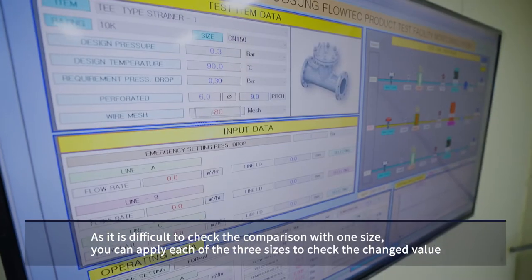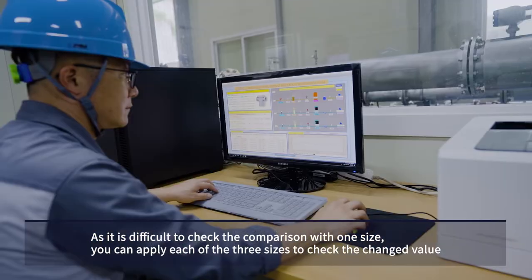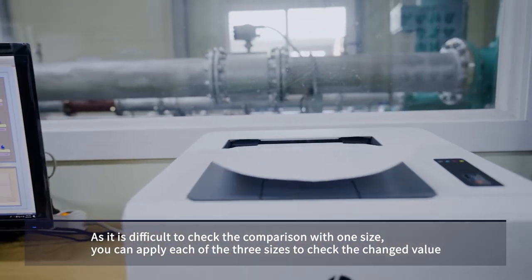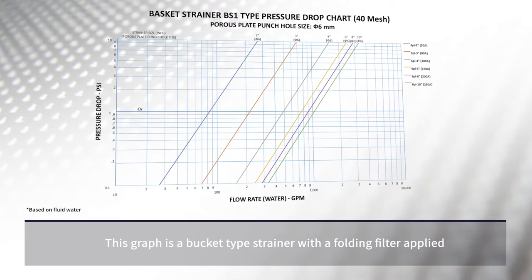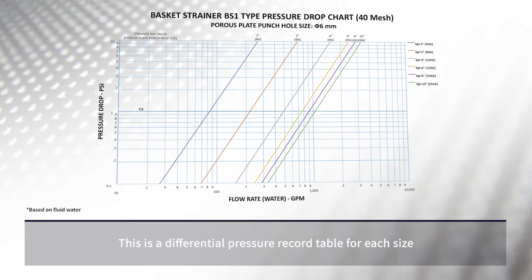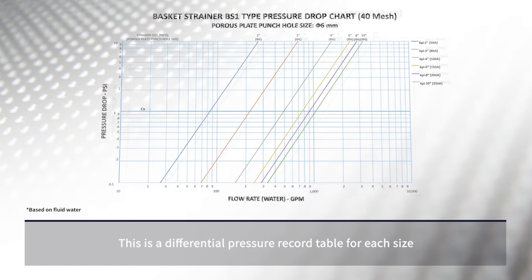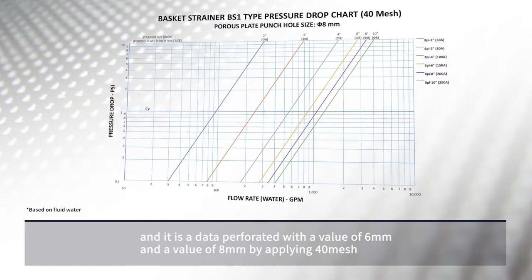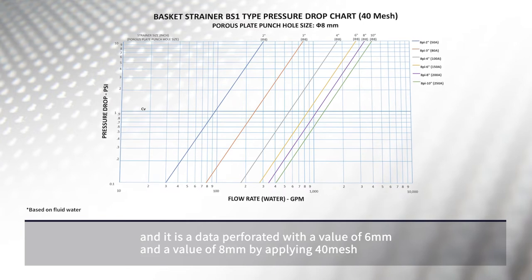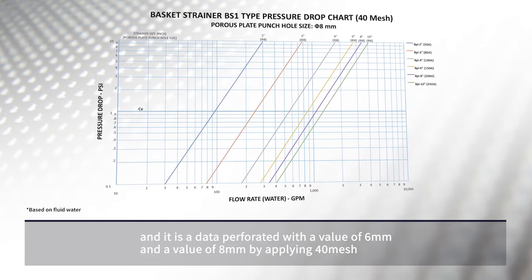As it is difficult to check the comparison with one size, three sizes can each be applied to check the changed value. This graph shows a bucket type strainer with a folding filter applied — a differential pressure record table for each size, with data perforated at values of 6 mm and 8 mm by applying 40 mesh.